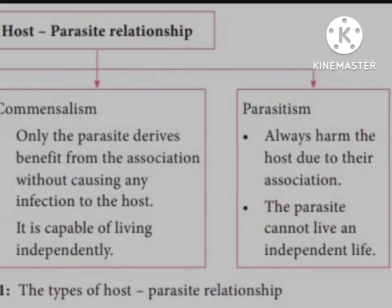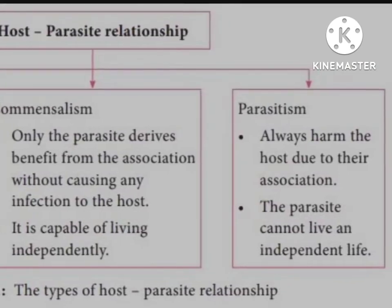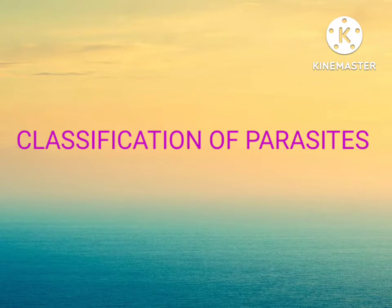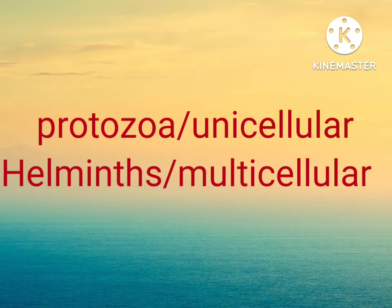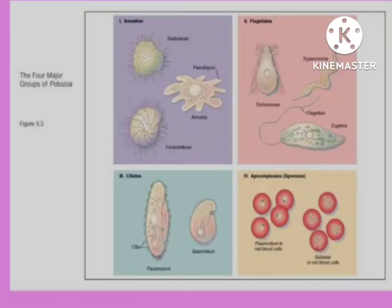Now, the classification of parasites: parasites are divided into two parts — Protozoa and Helminths. Protozoa are unicellular and Helminths are multicellular. Within Protozoa, there are four families: Amoeba, flagellates, sporozoa, and ciliates.